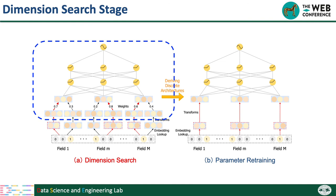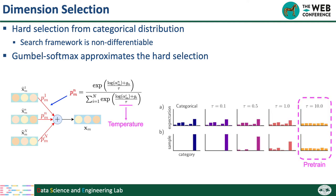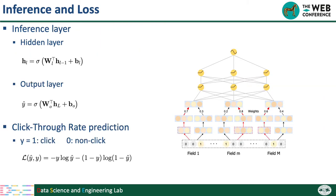Next, we take the weighted sum of transformed embeddings and feed them into the inference layer. Selecting the best dimension from candidates is a hard selection, so using traditional softmax can degrade selection accuracy. But directly using a hard selection makes the search framework non-differentiable. So we introduce Gumbel Softmax to simulate the hard selection. The temperature of Gumbel Softmax controls how hard the selection is. We first set a large temperature to generate even probabilities, ensuring all candidate embeddings are well pre-trained, then gradually decrease the temperature so the selection becomes harder. Finally, we weight the transformed embeddings by the Gumbel Softmax probabilities and pass the weighted sum through the inference layer to calculate predictions using cross-entropy loss for CTR prediction.